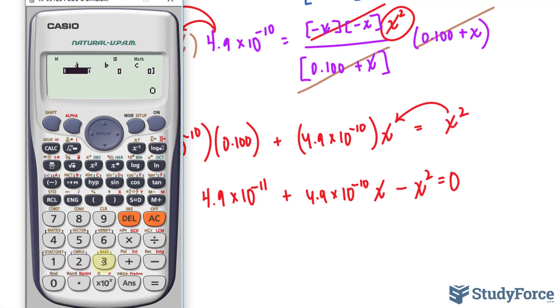Substitute your A, B, and C. Our A is negative 1. Our B is 4.9 times 10 raised to the power of negative 10. Our C is even smaller, 4.9 times 10 raised to the power of negative 11.